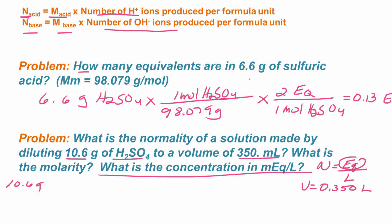So we have 10.6 grams of sulfuric acid. And we know that there are 98.079 grams per mole. And each mole, it's a diprotic acid, that has two equivalents. So this works out to be 0.216 equivalents.